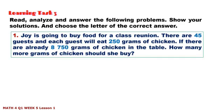Number 1: Joy is going to buy food for a class reunion. There are 45 guests and each guest will eat 250 grams of chicken. If there are already 8,750 grams of chicken in the table, how many more grams of chicken should she buy?